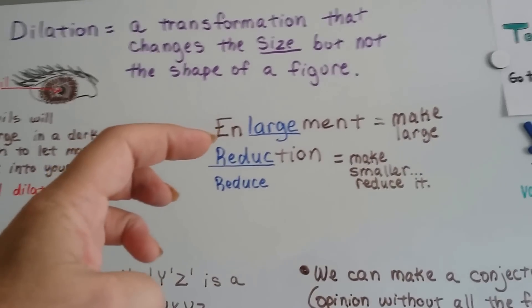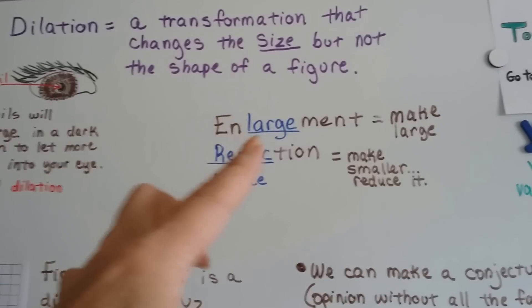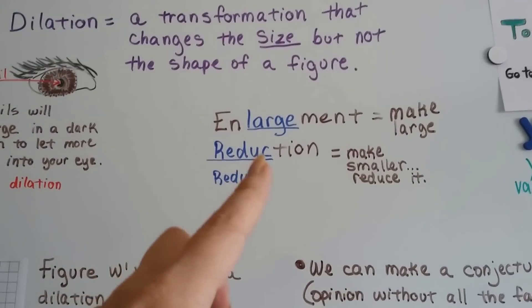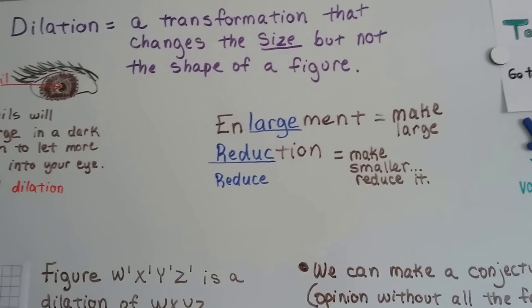So enlargement means to make large. It's actually got the word large in it, doesn't it? And reduction has reduce in there. It means to make smaller, to reduce it.